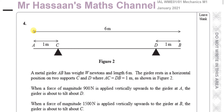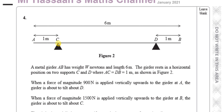Just imagine you lift it upwards from here — it's about to lift off the support, but hasn't lifted off yet. That 900 N is just enough to cause it to be about to lift off. When a force of magnitude 1,500 N is applied vertically upwards to the girder at B, the girder is about to tilt about C, meaning it's about to lift off from D. So they're giving you two different situations.